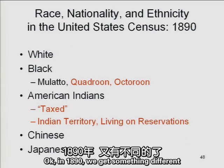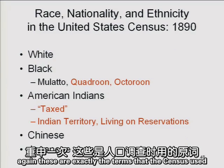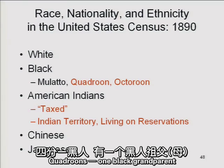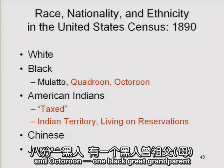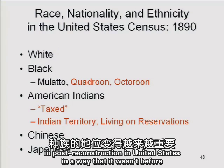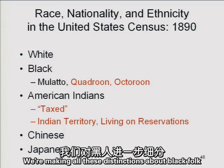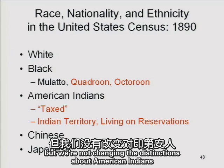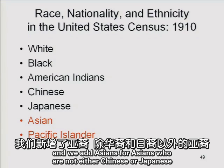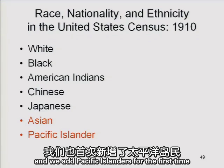In 1890, blacks were further classified as mulattoes — one white parent, one black parent — quadroons — one black grandparent — and octoroons — one black great-grandparent. This shows how race became very important in post-Reconstruction United States. In 1910, all those black distinctions disappeared from the census, and Asians for non-Chinese, non-Japanese Asians were added, along with Pacific Islanders for the first time. Why 1910? The Spanish-American War — we got the Philippines and other territories, so we had to start counting Pacific Islanders.